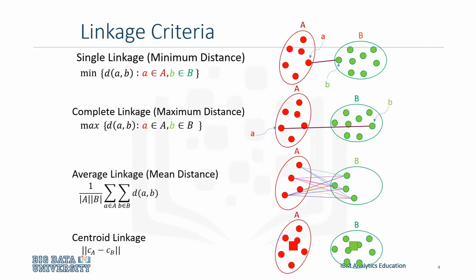CA represents the centroid for cluster A and CB represents the centroid for cluster B. We then take the magnitude of the distance between the two centroids.